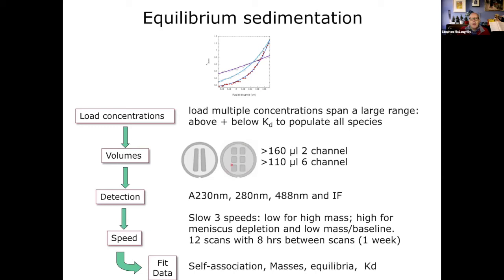For equilibrium experiments, typically use a six-sector cell taking 110 µL per channel at different concentrations spanning above and below the Kd to populate all species. Run at three speeds: low for high-mass species, high for depletion of the meniscus, and an intermediate speed. Typically collect 12 scans with eight or more hours between scans, confirm equilibrium at each speed before moving on, then fit the data to get ideas about self-association masses and equilibrium constants.